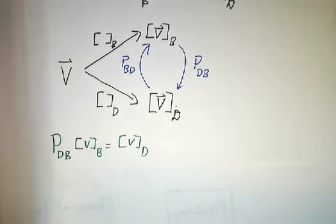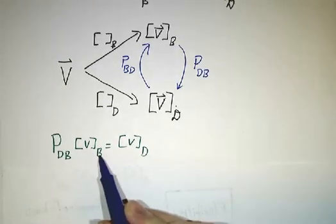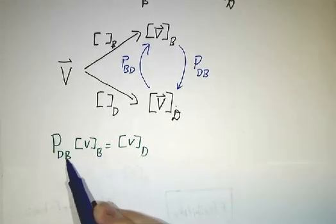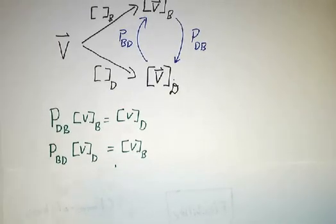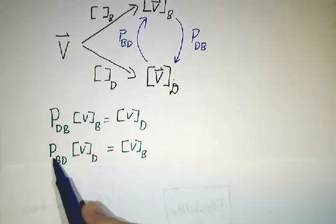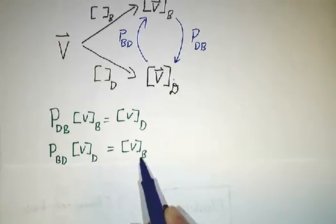In other words, if you take the coordinates of something in the B-basis and multiply by P_DB, you get the coordinates in the D-basis. If you start with the coordinates in the D-basis and multiply by P_BD, you get the coordinates in the B-basis.